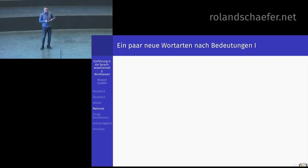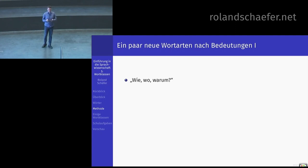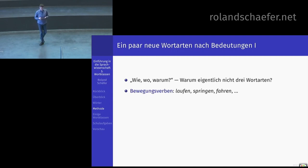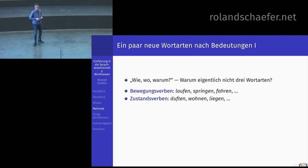Jetzt könnte man neue Wortklassen nach Bedeutungen vorschlagen. Sie merken, Ding-Wort und Tu-Wort zielen auf Bedeutungen ab. Wenn wir haben wie, wo, warum – und das sind die Umstandswörter – warum sind das eigentlich nicht drei Wortarten? Das bedeutet doch alles Unterschiedliches. Wegen des Regens und im Regen – das sind zwei verschiedene Arten von Bedeutung. Warum sind das nicht drei Wortarten, wenn man Wortarten nach Bedeutungsklassen einteilt? Oder wir könnten Bewegungsverben von Zustandsverben unterscheiden. Warum denn nicht? Das sind klar unterscheidbare Bedeutungsklassen.